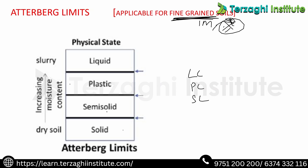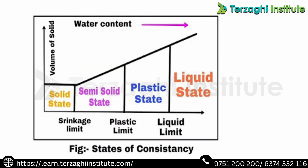Semi-solid, plastic, and liquid states. From dry soil to slurry soil — these are the basic stages. The limits fall on the borders between these states. This is the state of consistency.